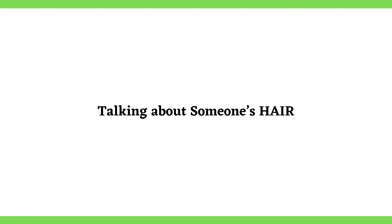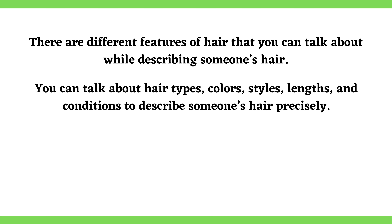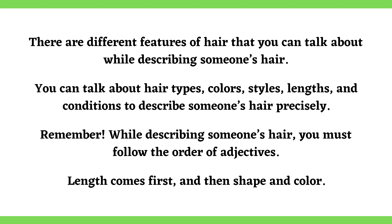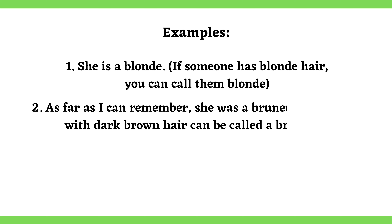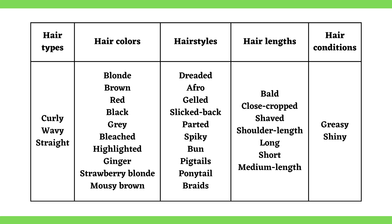Talking about someone's hair: There are different features of hair that you can talk about while describing someone's hair. You can talk about hair types, colors, styles, lengths, and conditions to describe someone's hair precisely. While describing someone's hair, you must follow the order of adjectives — length comes first, and then shape and color. Examples: She is a blonde. As far as I can remember, she was a brunette. The lady is a redhead. The man I met was completely bald. Here is a table that shows descriptions of hair from different aspects.